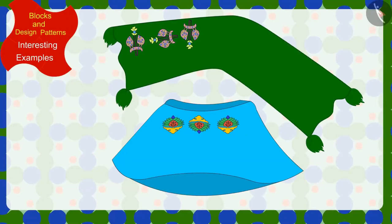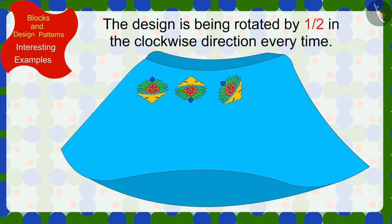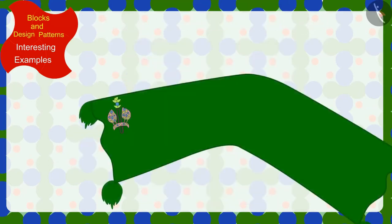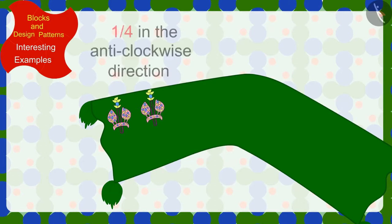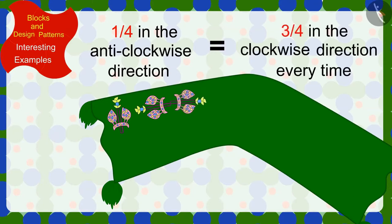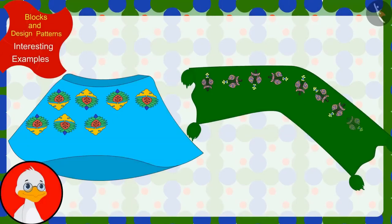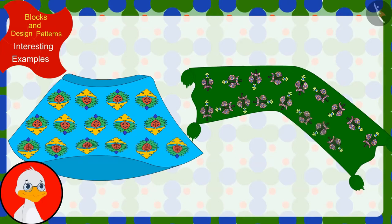Children, can you now help Uncle find the rules of patterns made on this skirt and the dupatta? Find the solution with your friends. In the pattern on the skirt, the design is being rotated by half in the clockwise direction every time. And in the pattern made on the dupatta, the design is being rotated by a quarter in the anticlockwise direction, or three-fourths in the clockwise direction, every time. Uncle found the rules of those incomplete patterns and completed them.